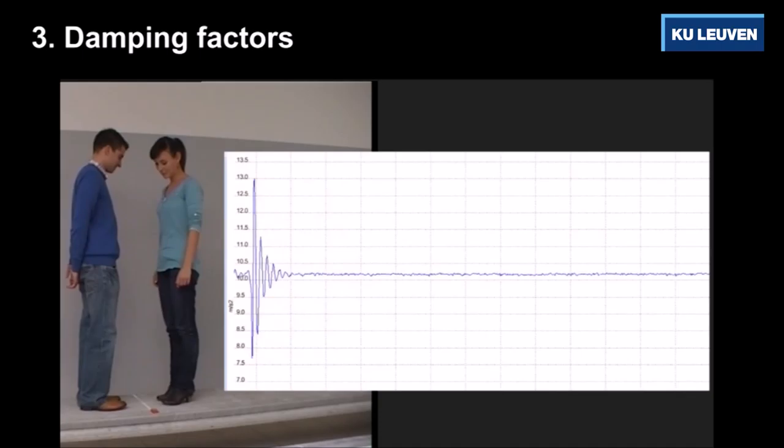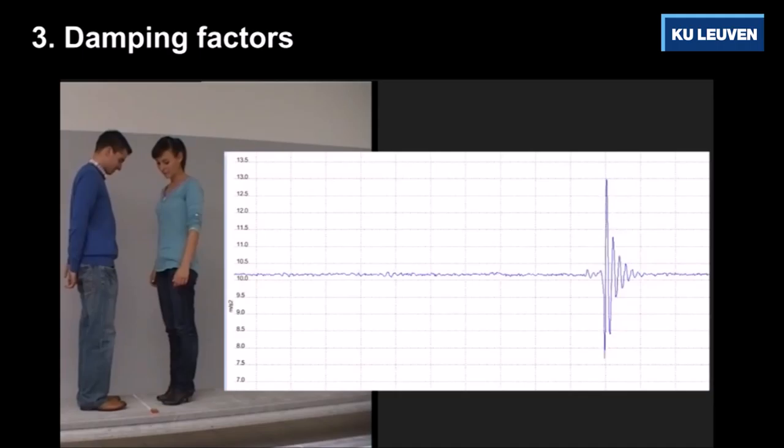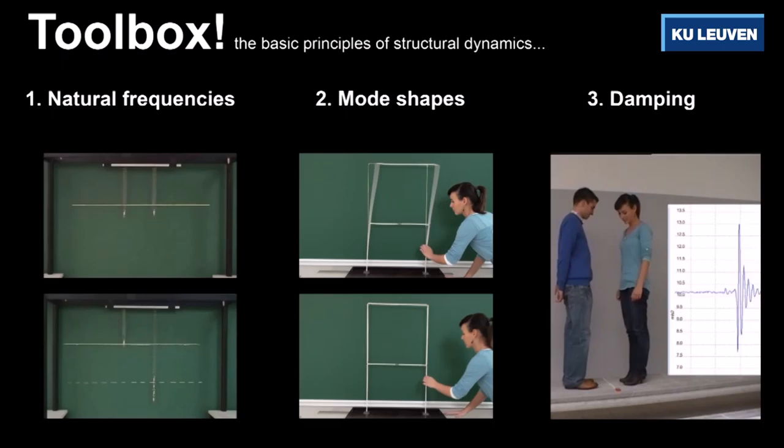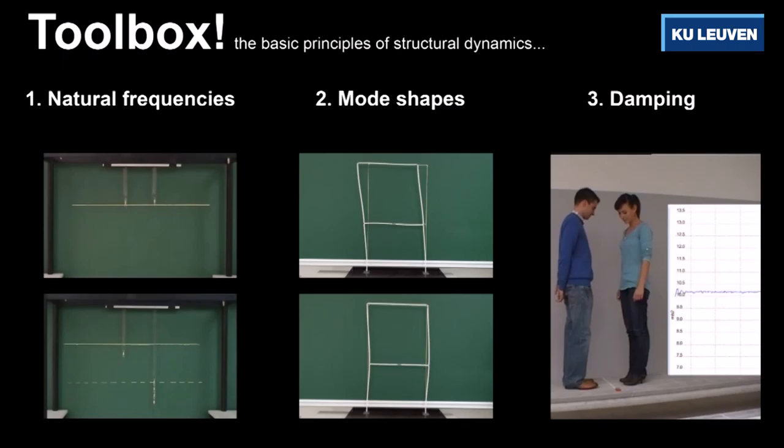Here you see again the concrete slab, now with two persons on top of it. On the right, you see the real-time measured vibrations of the slab. Using a heel drop, the slab is brought into motion. The slab starts to vibrate, but the amplitudes of the vibration are decreasing in time. This phenomenon is due to dissipation of energy and, for the present case, due to the inherent damping of the structure.